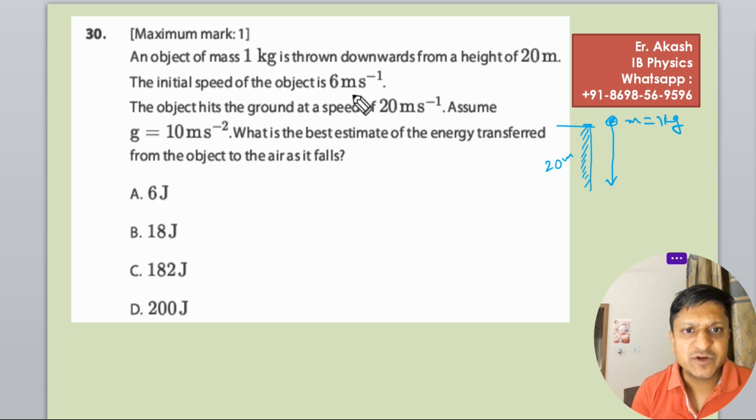The initial speed of the object is 6 meters per second and the final velocity when the object hits the ground is 20 meters per second. Final velocity is 20 meters per second. Assume g as 10 meters per second squared.